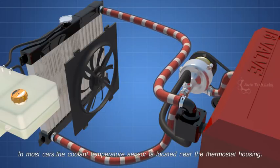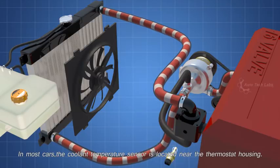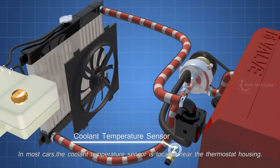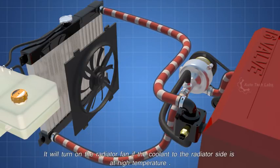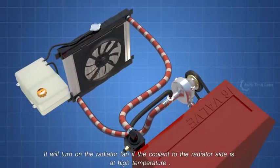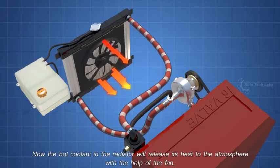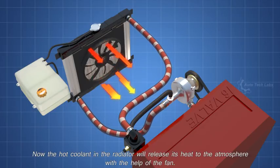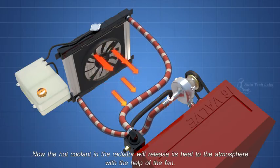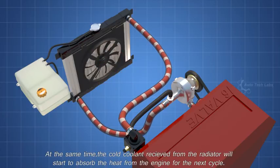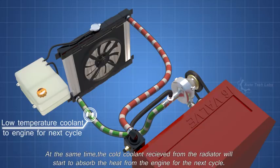In most cars, the coolant temperature sensor is located near the thermostat housing. It will turn on the radiator fan if the coolant to the radiator side is at high temperature. Now, the hot coolant in the radiator will release its heat to the atmosphere with the help of the fan. At the same time, the cold coolant received from the radiator will start to absorb the heat from the engine for the next cycle.